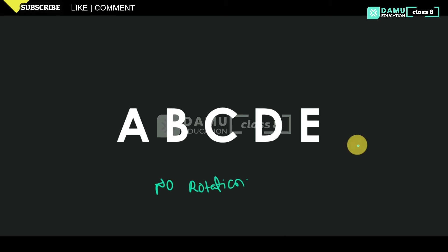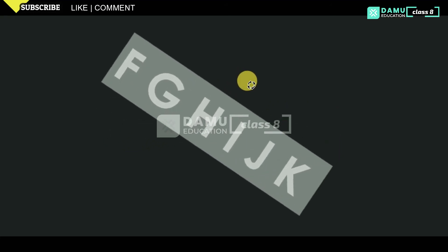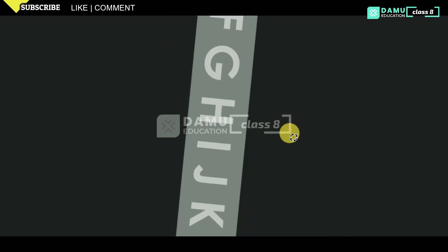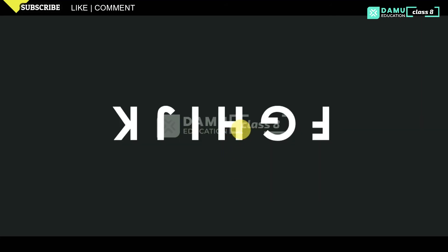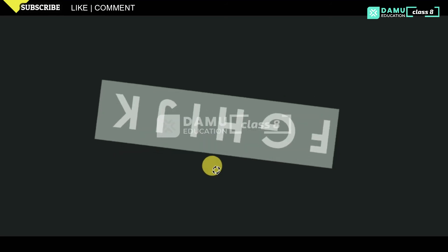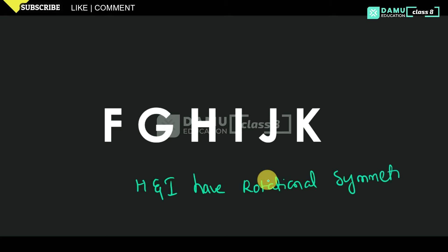Going through F, G, H — if you rotate continuously, observe H and I: we are getting the same letters after rotating also. So H and I have rotational symmetry.